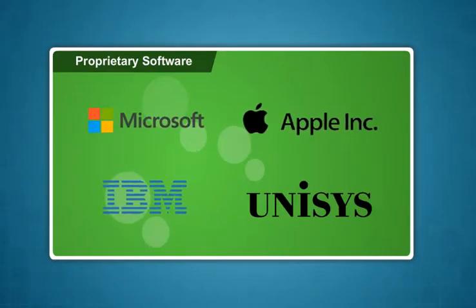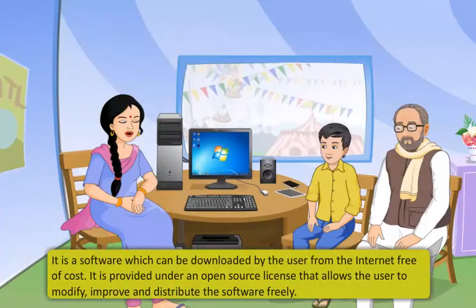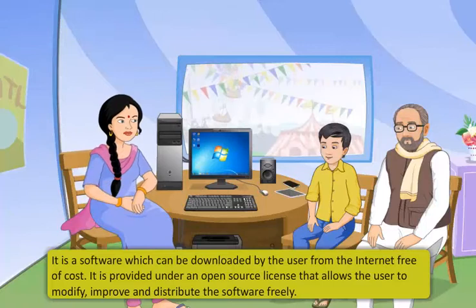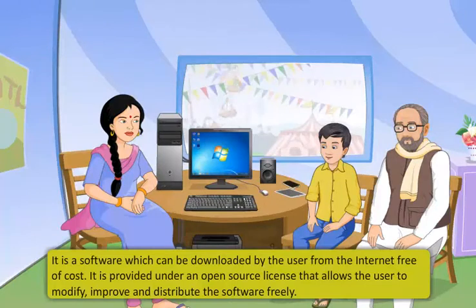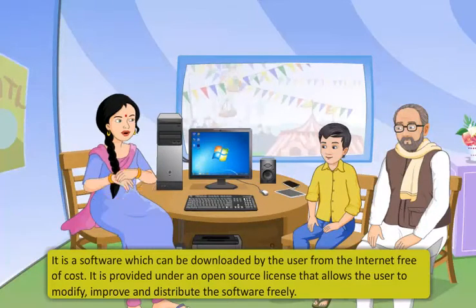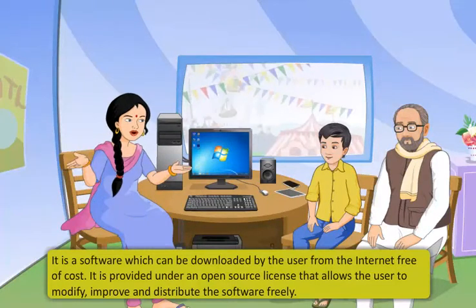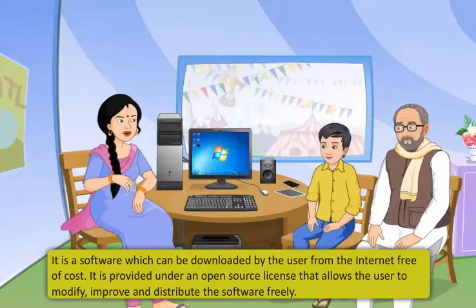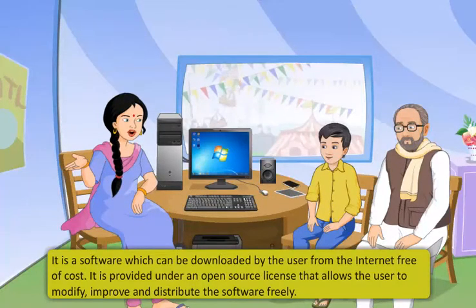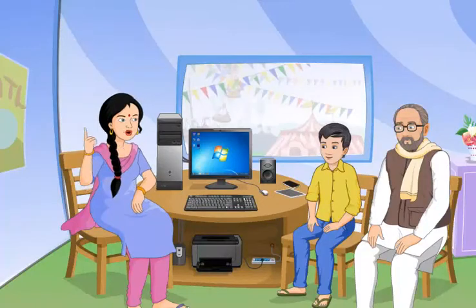Free or open source software is software which can be downloaded by the user from the internet free of cost. It is provided under an open source license that allows the user to modify, improve, and distribute the software freely. However, the changes cannot be copyrighted.